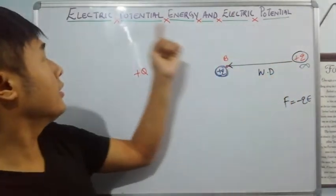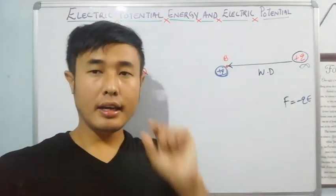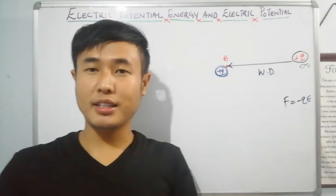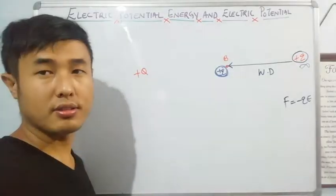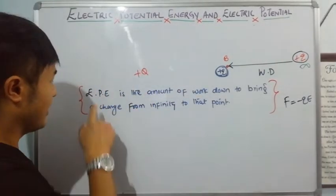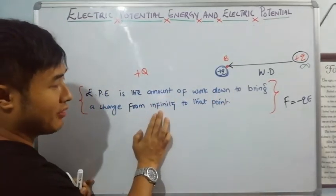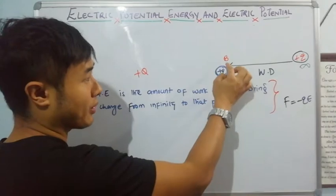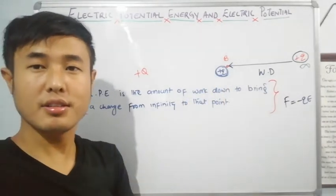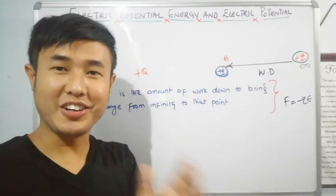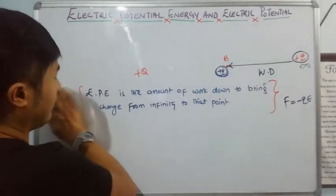That work done will be stored in this charge at point B as electric potential energy. This is all about electric potential energy. The definition says: electric potential energy is the amount of work done to bring the charge from infinity to that point — for example, point B — in the electric field.